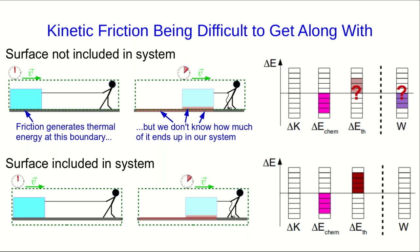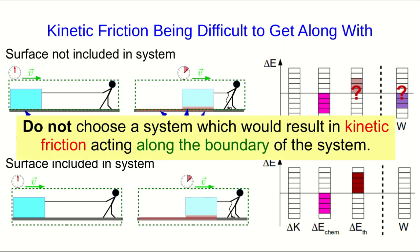For now, all I want to say is that we should never choose a system which would result in kinetic friction acting along the boundary of the system. In other words, if there's kinetic friction between two objects, you should really include both objects in your system.